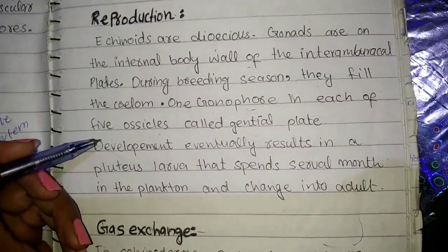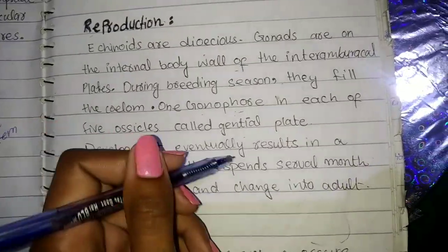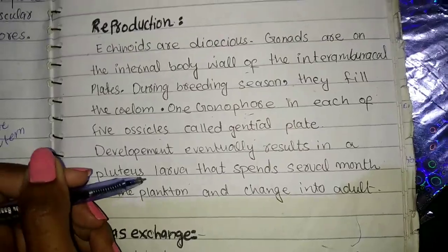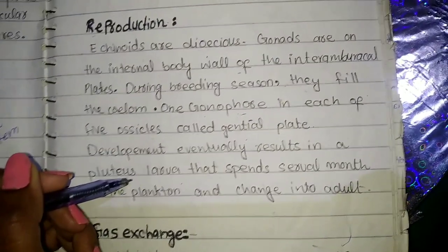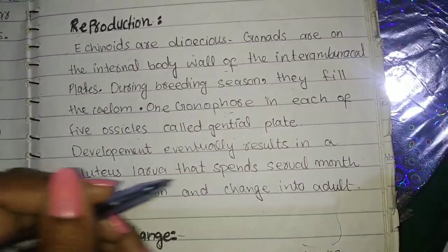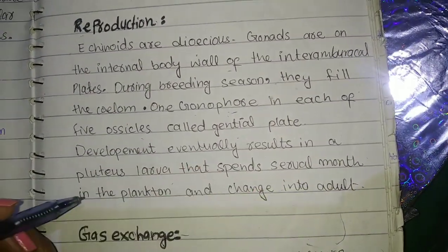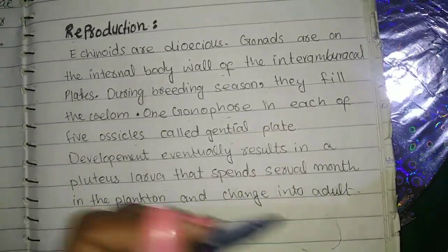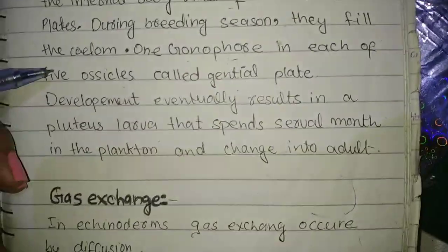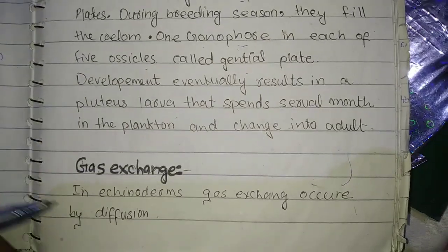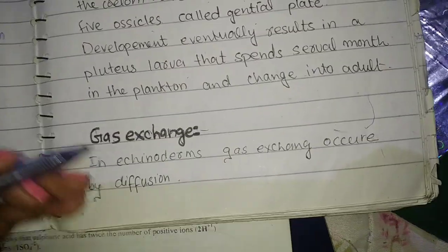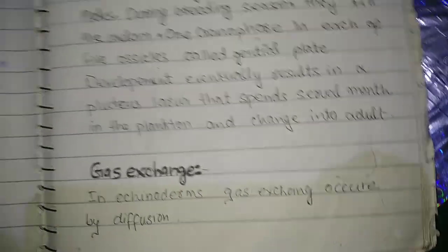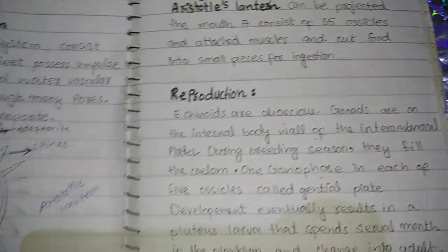Development eventually results in pluteus larvae, which spend several months in the plankton before changing into adults. For gas exchange in echinoderms, it occurs by diffusion. Thank you students, bye bye friends.